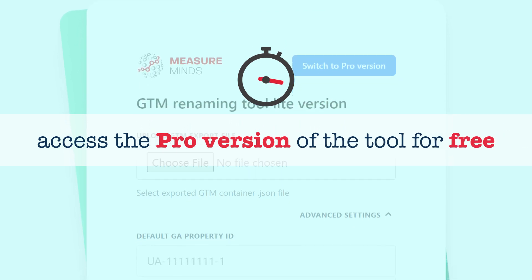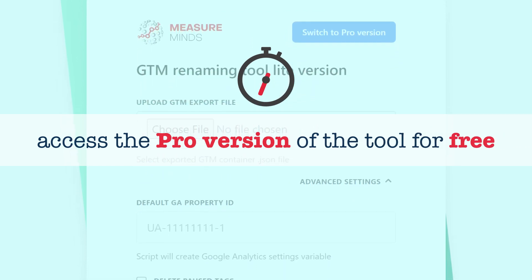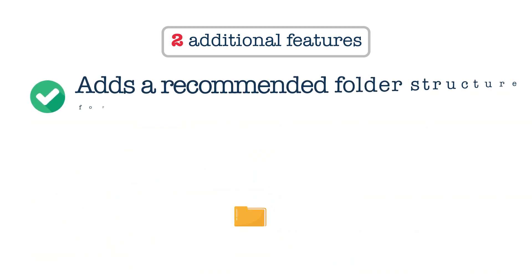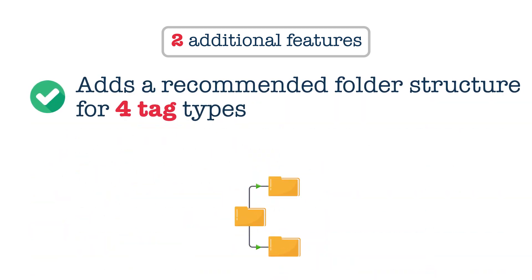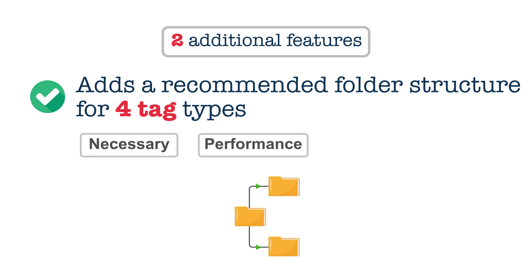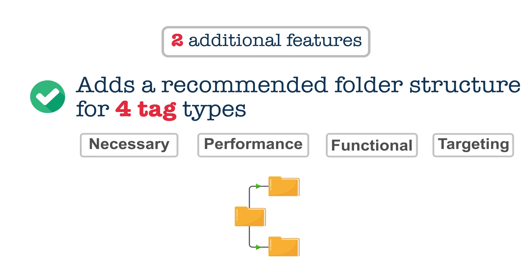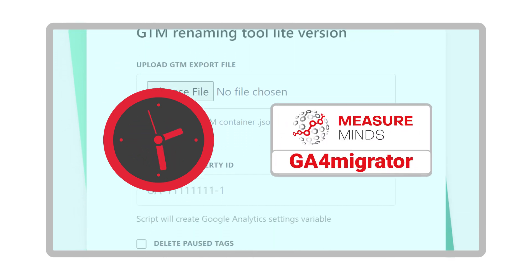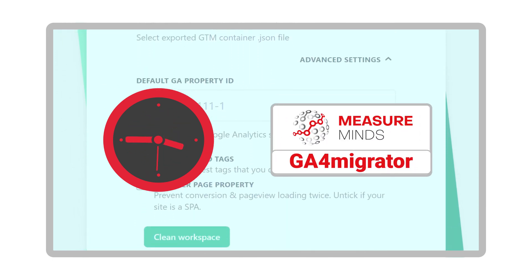Also, for a limited time, you can access the pro version of the tool for free. It has two additional features: it creates changes in a new workspace via the GTM API, so there's no need to manually import. It also adds a recommended folder structure for four tag types — necessary, performance, functional, and targeting. Save yourself countless hours with MeasureMinds' free GTM Migrator tool today.